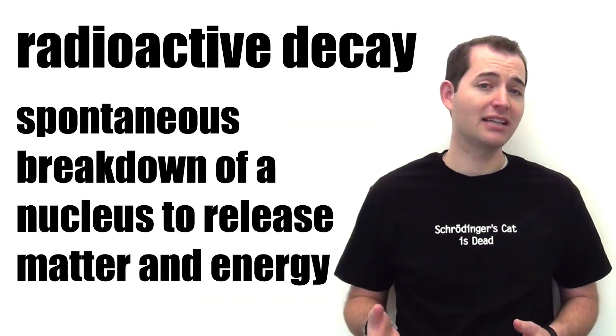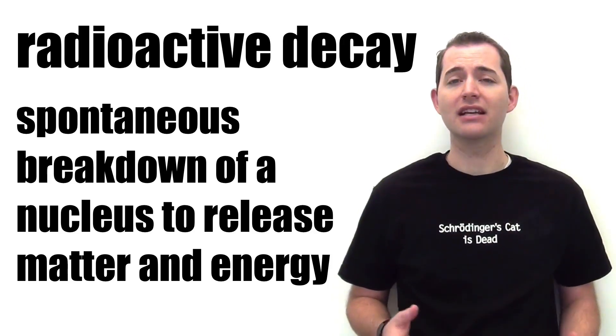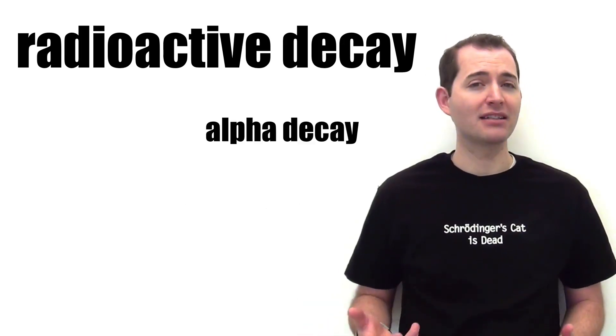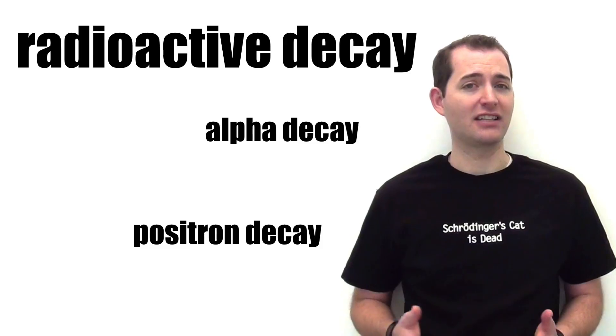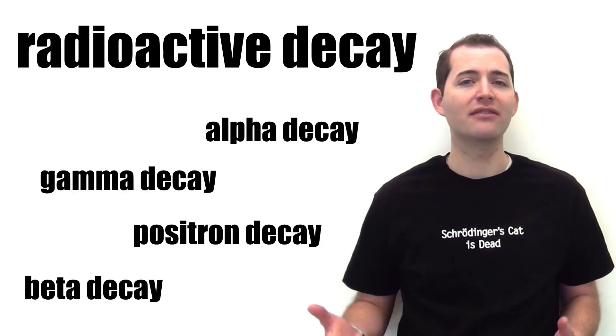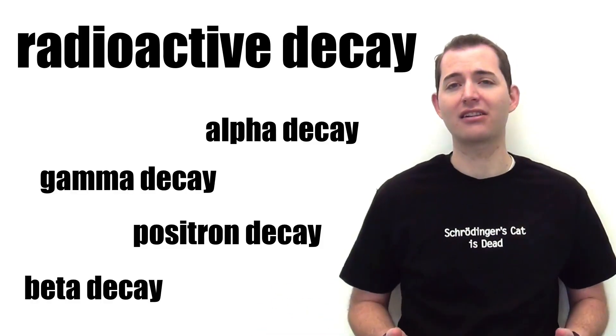Let's first look at some important terms that will help us understand this process. The first is radioactive decay. Radioactive decay is the spontaneous breakdown of a nucleus into matter and energy. There are many processes that fall into the category of radioactive decay, but they all have similar patterns and similar characteristics.